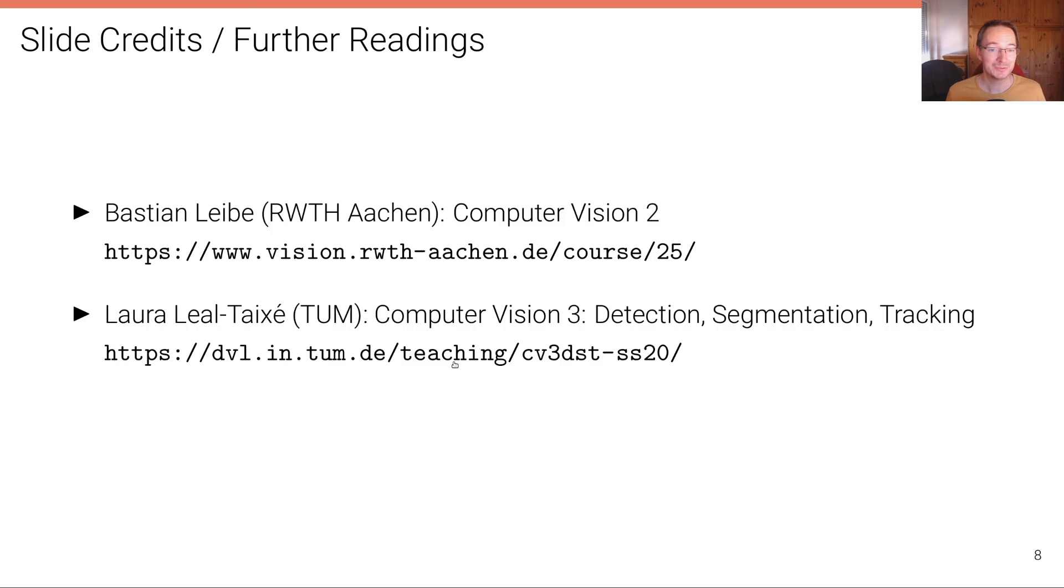I want to mention two great resources if you're interested more in object tracking. And these are resources that I have partially also used to create these slides. So I want to credit them here as well. The first is a course called Computer Vision 2 from Bastian Leibe from RWTH Aachen. And you find the link here where slides are publicly available. And the second one is a course called Computer Vision 3 Detection, Segmentation and Tracking from Laura Leal-Taixé from TU Munich. And she has both slides and also video lectures online. So I can highly recommend having a look at those resources if you're interested in this topic.